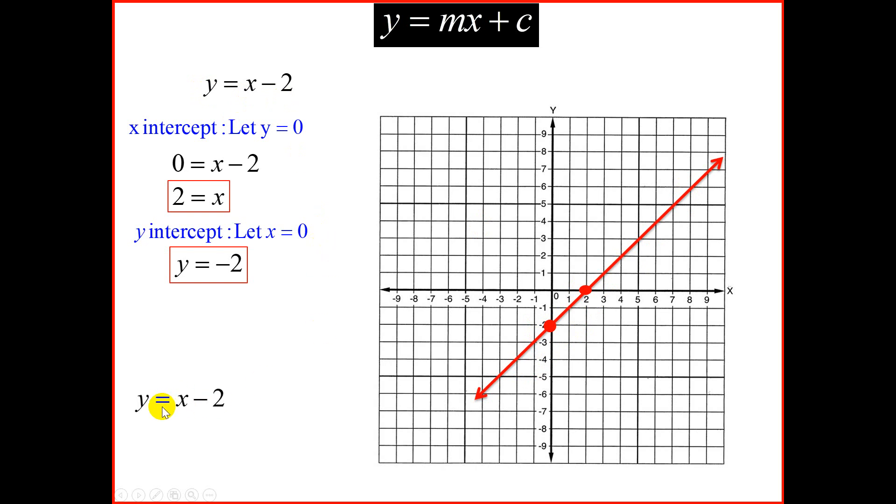Just remember, if y is equal to x minus 2, your gradient is the coefficient of x, which is 1. And your c is negative 2, which is the y-intercept. Also, looking at a graph from left to right, if the gradient is positive, we have an uphill moving from left to right.